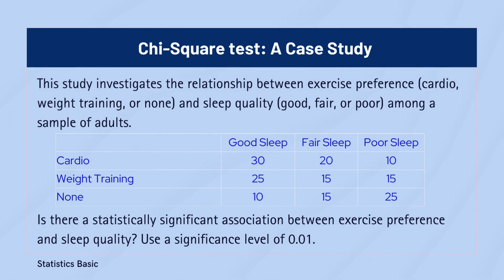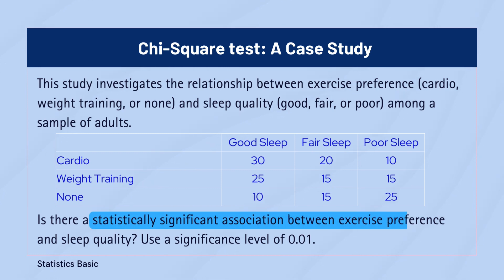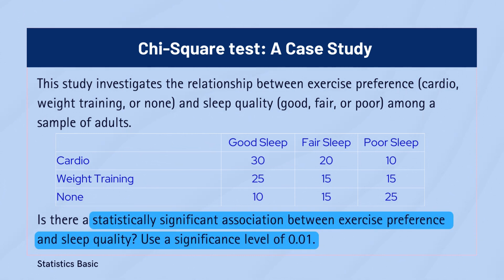We'll use a chi-square test to determine if there's a statistically significant association between these two categorical variables, with a significance level set at 0.01.